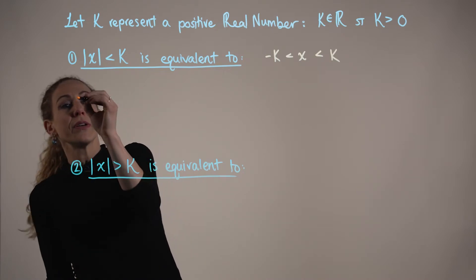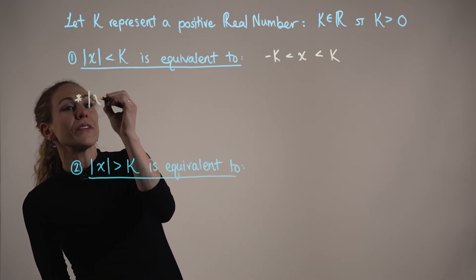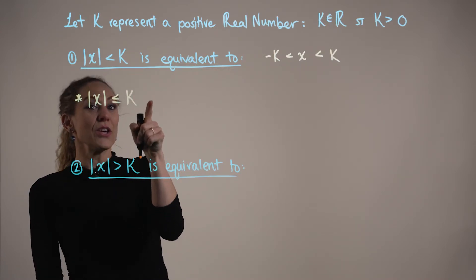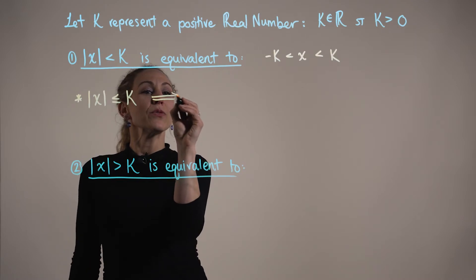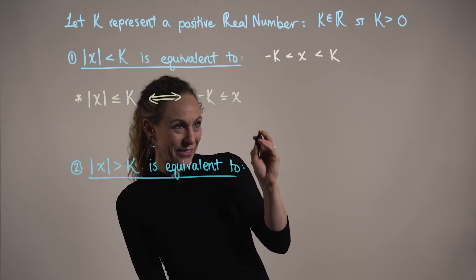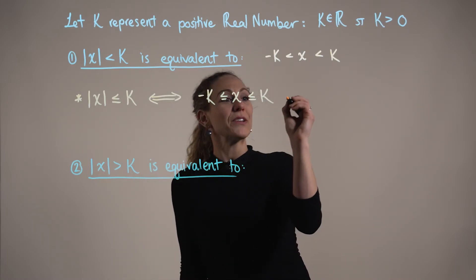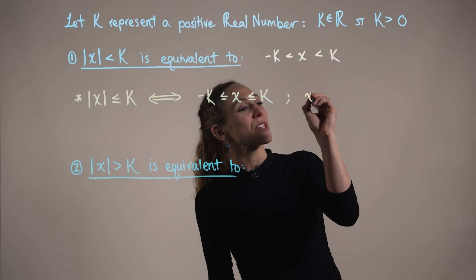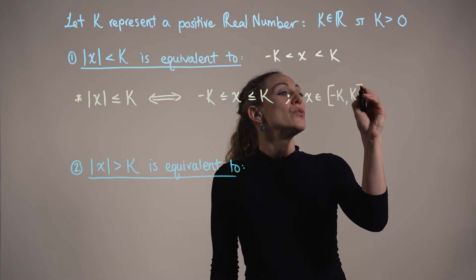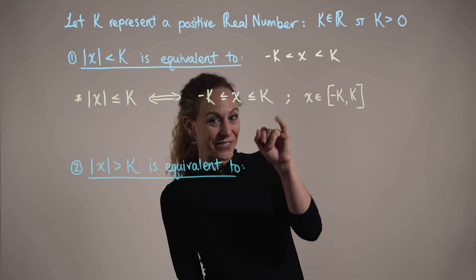This equivalence property also applies to an inequality of the form: the absolute value of x is less than or equal to positive k. An inequality of this form is equivalent to saying that x is greater than or equal to negative k and less than or equal to positive k. As an interval, this case reads that x is an element of the closed interval from negative k to positive k, including the endpoints negative k and positive k.